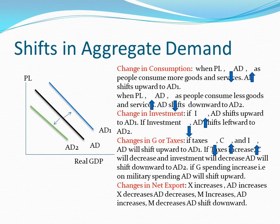The last point is changes in net exports. When exports increase in the country, that means the country is in a good economic situation and output will increase, so the aggregate demand curve increases as well. In the reverse situation, if exports decrease, the aggregate demand curve decreases from AD to AD2. When imports increase, the aggregate demand curve increases as well, and when imports decrease, the aggregate demand curve decreases.